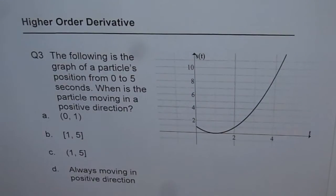And four choices are: 0 to 1, 1 to 5 both included, C is 1 to 5 where 5 is included and not 1, and D is always moving in positive direction.